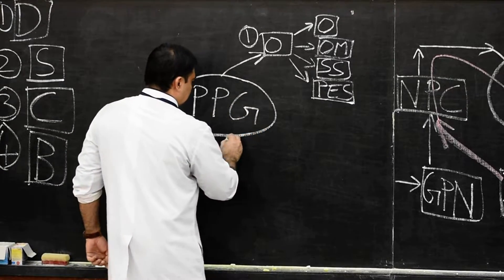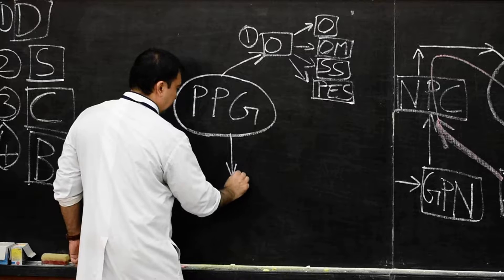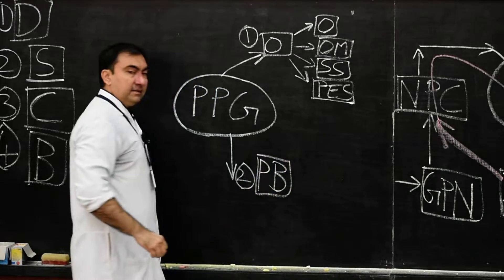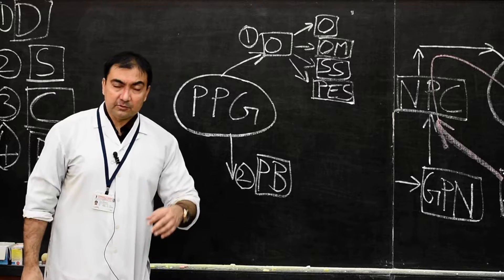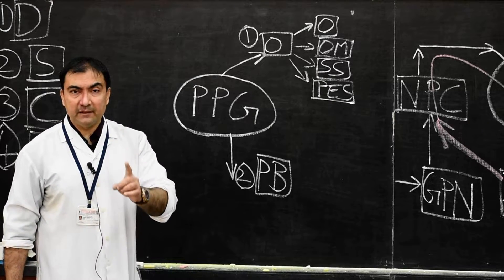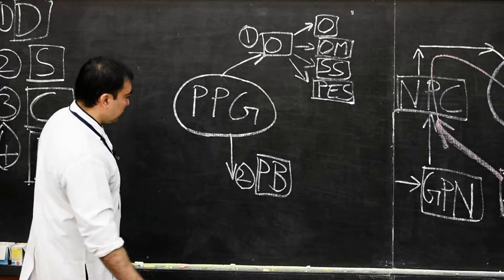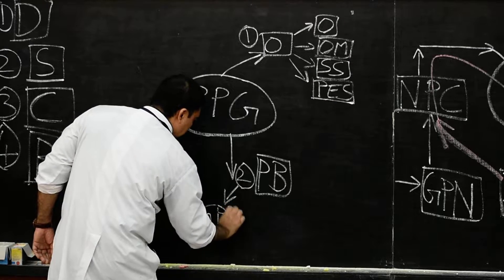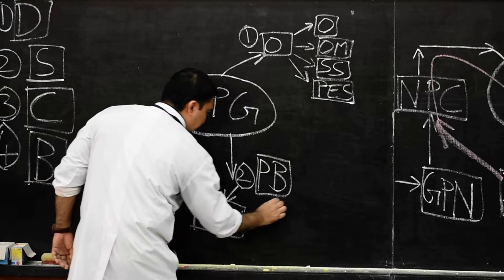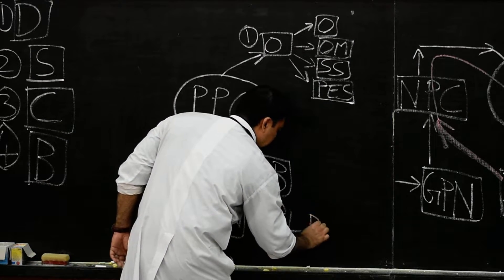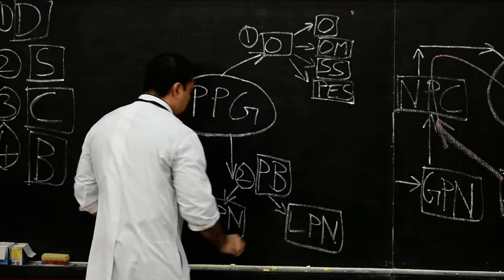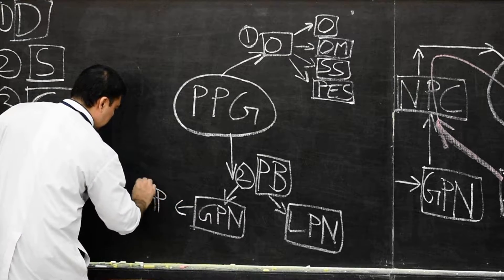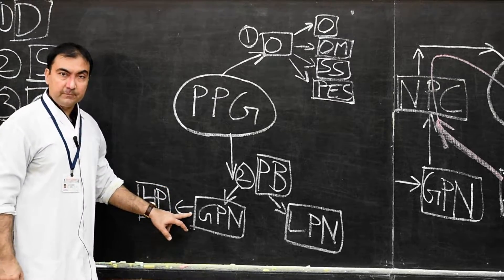The second set of branches are the palatine branches. Two canals are present — the greater palatine canal and the lesser palatine canal — both opening on the surface of the hard palate as the greater palatine foramen and the lesser palatine foramen. These palatine branches divide into the greater palatine nerve and the lesser palatine nerve. The greater palatine nerve will supply the hard palate, passing through the greater palatine foramen.